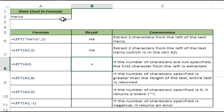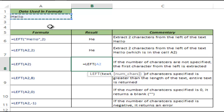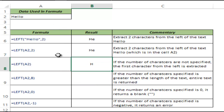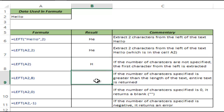Now let's see what happens if I do not give any number of characters to this formula. If I just use it without that argument, it returns the leftmost character of the word. So in this case it returns H from Hello.